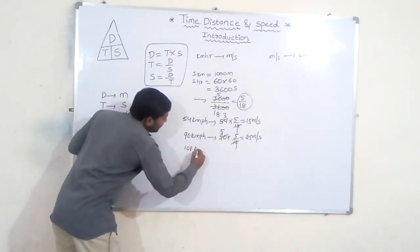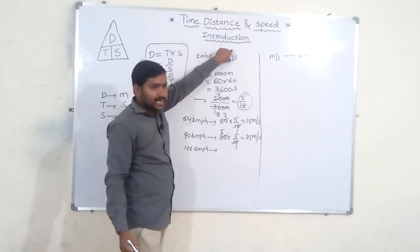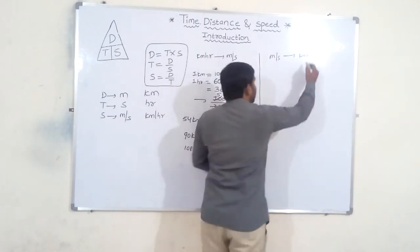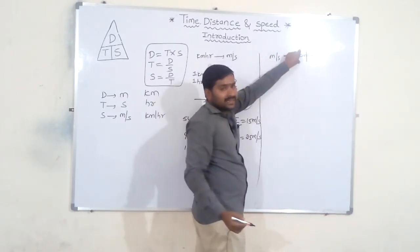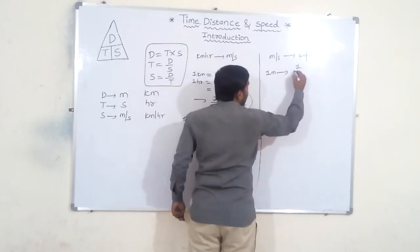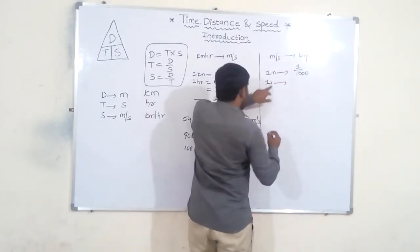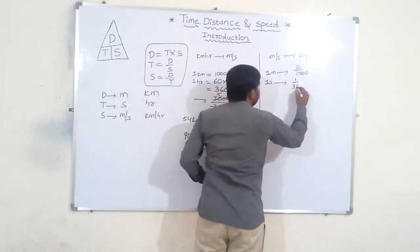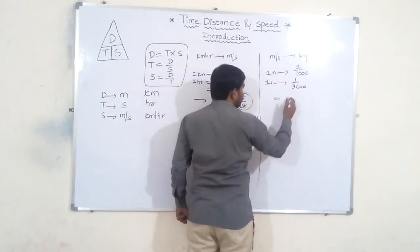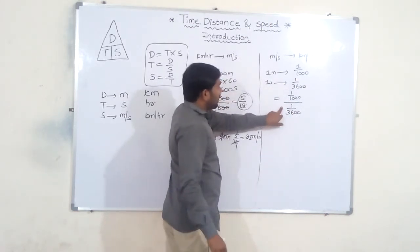Friends, try 108 km per hour in terms of meter per second. Now, to convert meter per second to km per hour: 1 meter per second means 1 by 1000 km per second, and 1 second is 1 by 3600 of an hour.